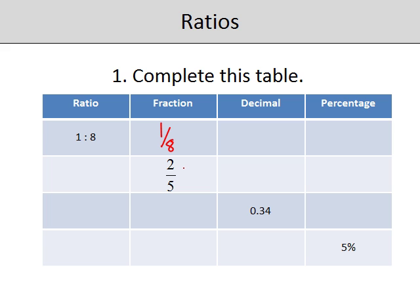Now 1 eighth as a decimal, we'd need to do 1 divided by 8 and that comes out at 0.125, and to get to a percentage the easiest thing is to multiply our decimal by 100 which is 12.5%.